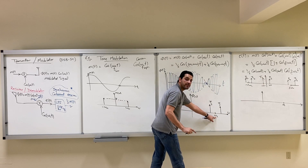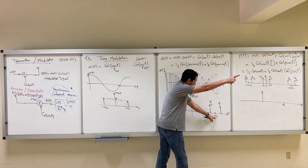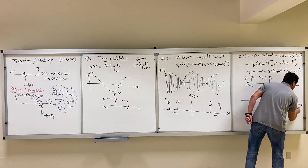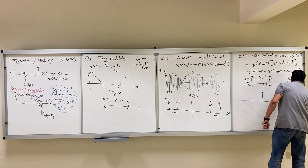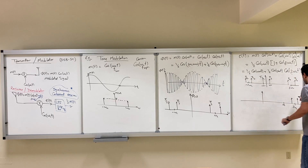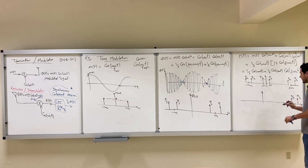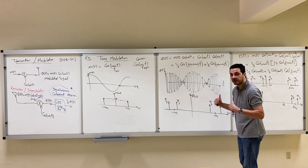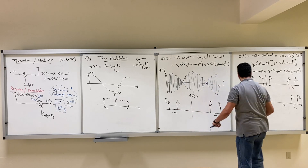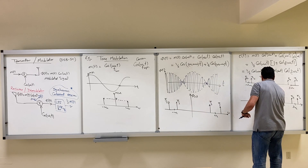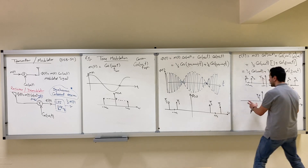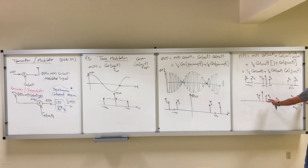Shifting the spectrum of phi right by omega_C: the component at omega_C becomes 2·omega_C, giving one delta there. The component at negative omega_C shifts to zero, giving two deltas around zero — all with area pi over four since we divide by two. So after shifting right by omega_C, we have deltas at 2·omega_C with pi/4 and at zero with pi/4.